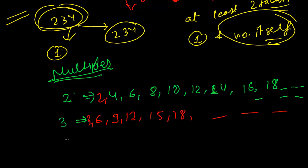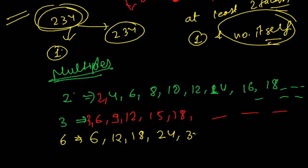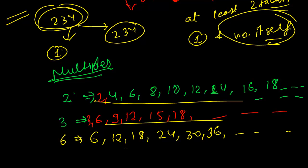Similarly, if someone asks for multiples of 6: 6 itself, then 12, 18, 24, 30, 36, and so on. These numbers are called the multiples of their respective numbers — 2, 3, and 6 respectively. Multiples of any number x are those numbers y to which x can exactly divide.